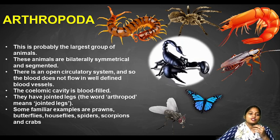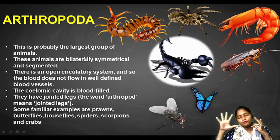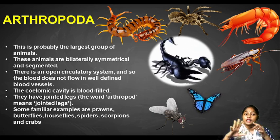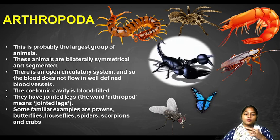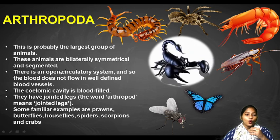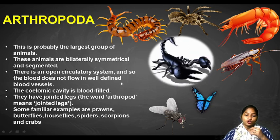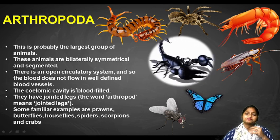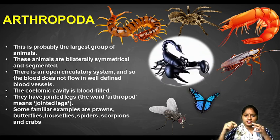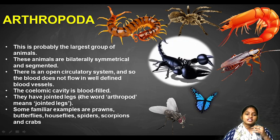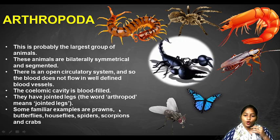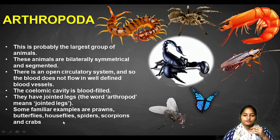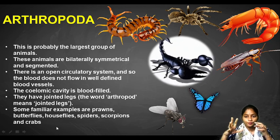Next is Arthropoda. This is probably the largest group of animals, with diverse types of organisms. These animals are bilaterally symmetrical and segmented — all of them have a segmented body. There is an open circulatory system, so the blood does not flow in well-defined blood vessels, and the coelomic cavity is blood-filled. They have jointed legs — Arthropod means jointed legs. Familiar examples include prawns, butterflies, houseflies, spiders, scorpions and crabs.